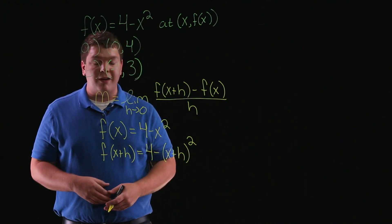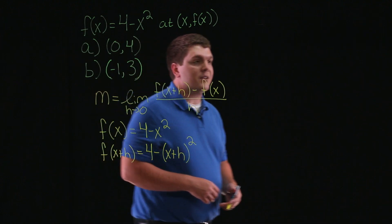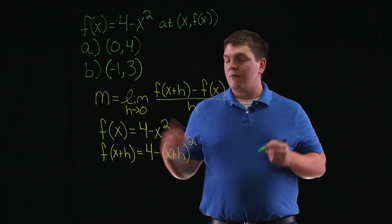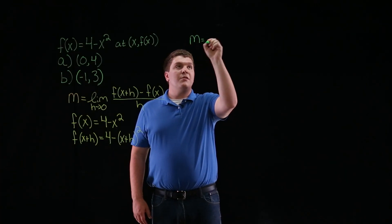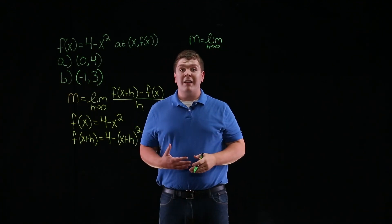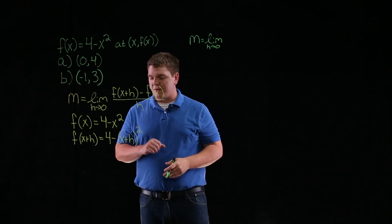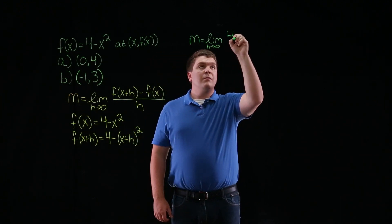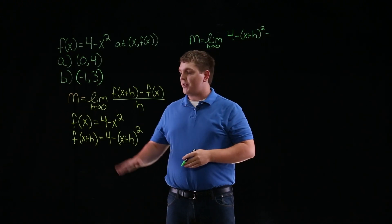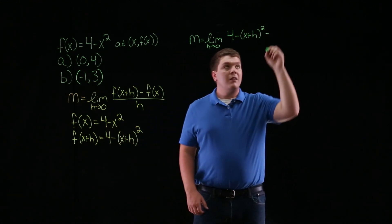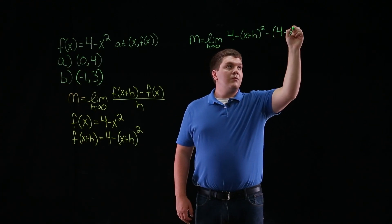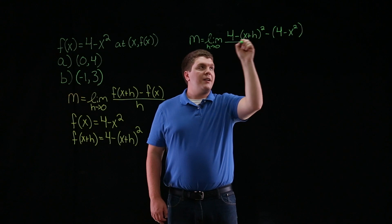Now that we have this written out, let's find the formula which represents the slope of the graph. Our slope m is equal to the limit as h approaches 0 of f of x plus h, which is 4 minus the quantity x plus h squared, minus our original function f of x. We want to be careful to put parentheses around the original function. This is all divided by h.